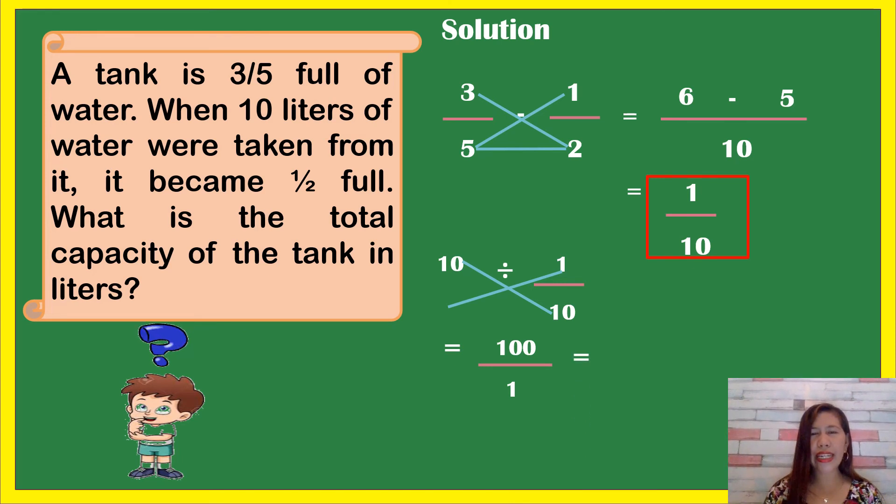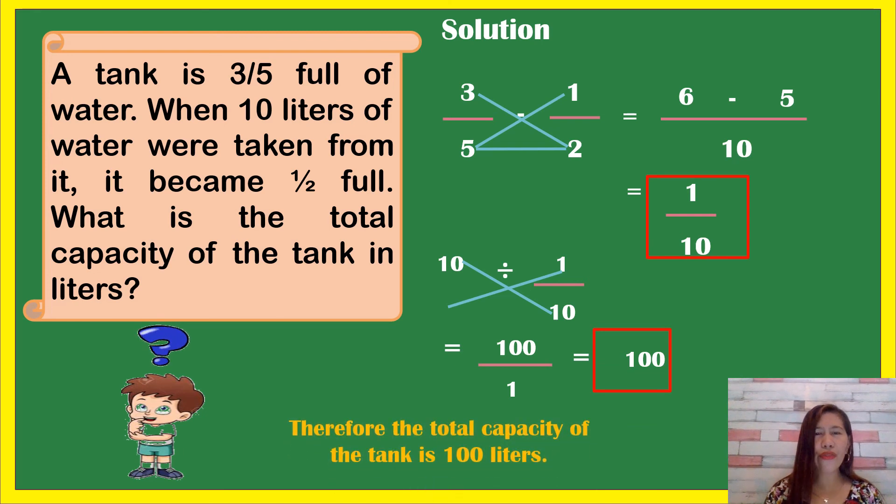100 divided by 1 equals 100. Therefore, the total capacity of the tank is 100 liters.